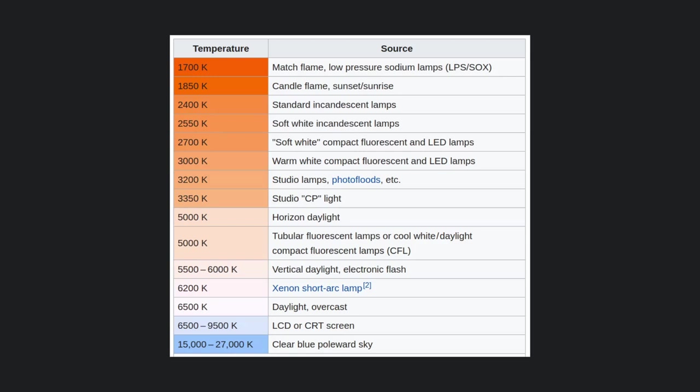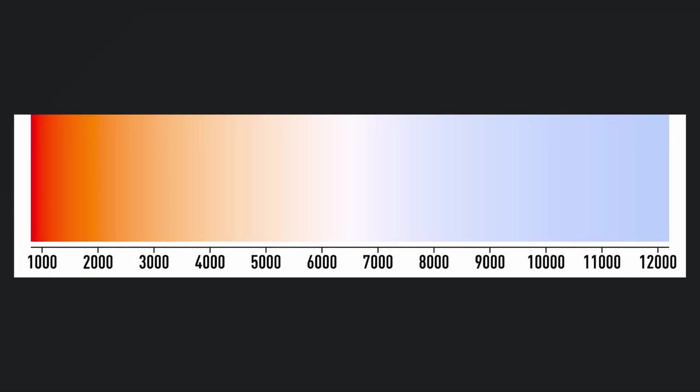So another representation here of the temperature scale. Remembering that 6500 Kelvin, or around here, is where our white point needs to be set when we're trying to calibrate our displays. And that if we move up into these ranges, everything gets tinted blue across the entire spectrum.